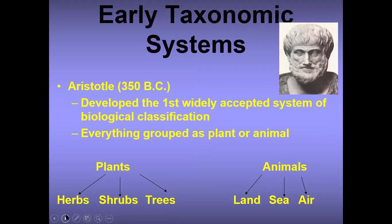Now, early taxonomic systems. Long ago we had somebody by the name of Aristotle. He developed the first widely accepted system of biological classification. Everything was either grouped as plant or animal — if you're not a plant, you're an animal. So he had plants like herbs, shrubs, and trees, and for animals he had categories of land, sea, and air.